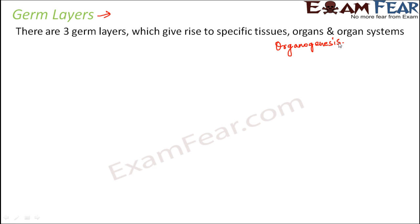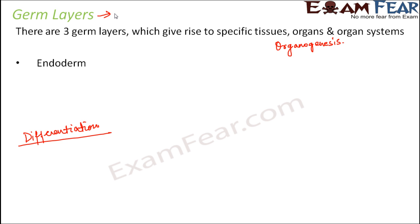How do these germ layers lead to the formation of organs and organ systems? That happens by a process called differentiation. Differentiation is a process by which cells, tissues, or organs gradually change their structure and function during embryonic development. In human beings there are three germ layers: endoderm, mesoderm, and ectoderm. The cells of these germ layers differentiate — they gradually change their structure and function to form specific tissues, which then form organs with specific functions.